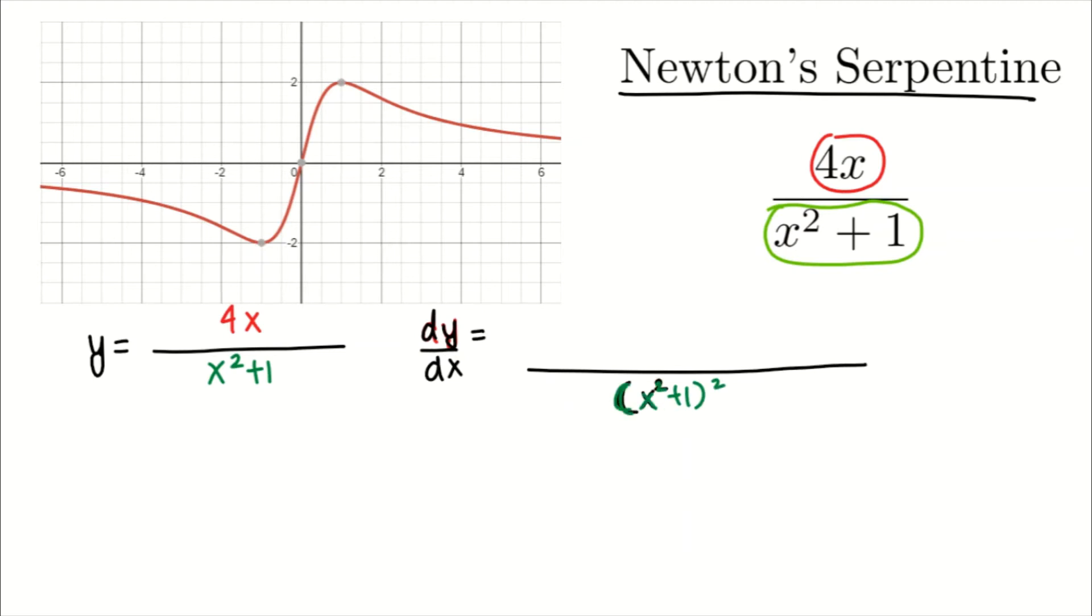Now we need to first write the denominator as it is. So x squared plus 1 multiplied by the derivative of the numerator. So d/dx of 4x, minus